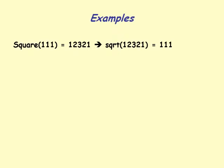We know that square of 111 is 12321, so square root of 12321 is 111.